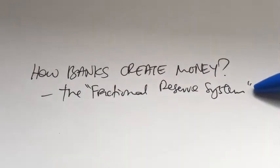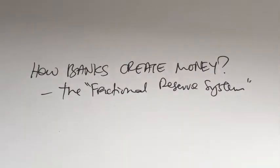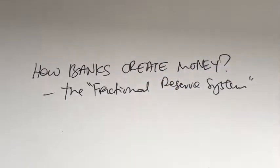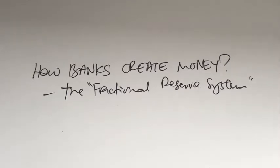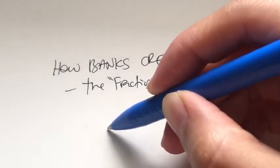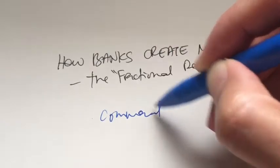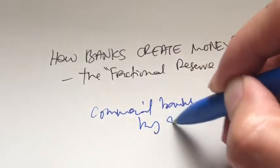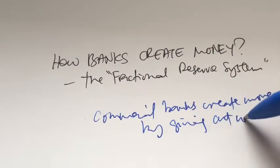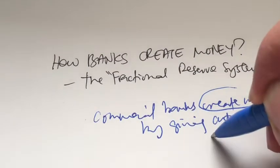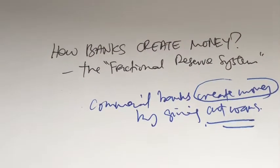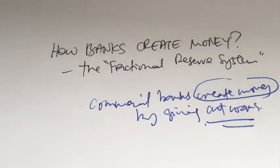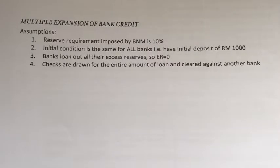So how does the fractional reserve system create money? Banks are only required to keep a fraction of their deposits in reserve, which means they have the rest of the deposits to lend out to other people — that's basically how banks create money. One very important thing to remember: commercial banks create money by giving out loans. Money is being created when banks give out loans. Therefore, the opposite is also true — when people pay back their loans, money is destroyed.